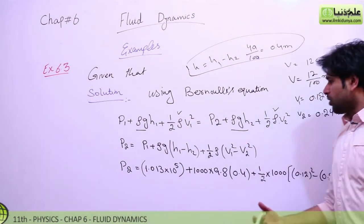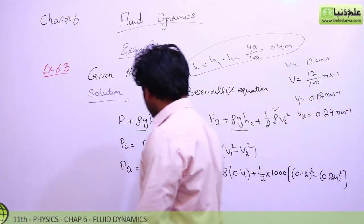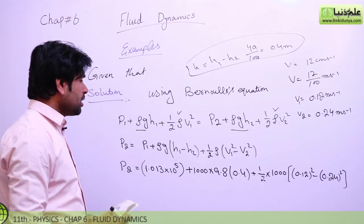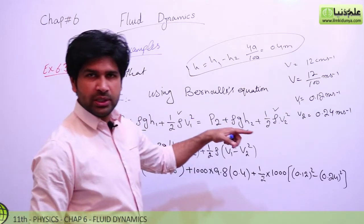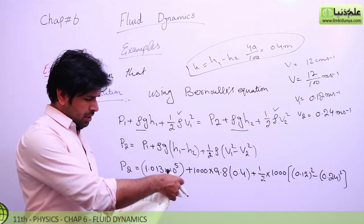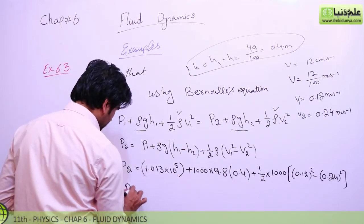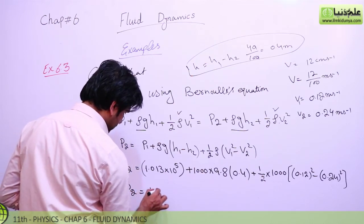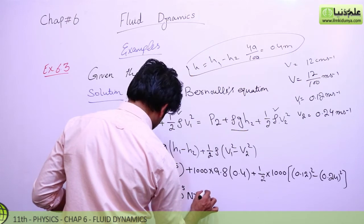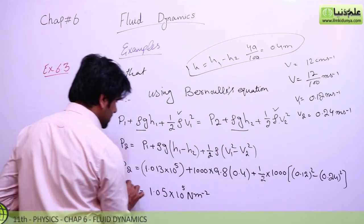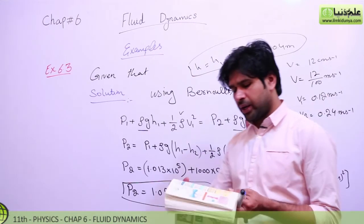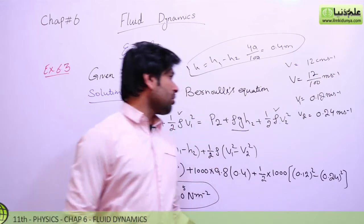By substituting all the required values and solving, we get the pressure at the bottom p2 = 1.05 × 10⁵ newton per meter square, which can also be written in pascals. This is the required pressure at the bottom side.